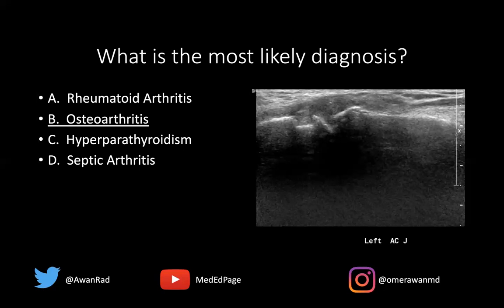In septic arthritis, there may be a joint effusion that could be complex. If we apply color Doppler, there may be some hyperemia around the effusion. You'd also see erosions along both sides of the joint, and maybe some soft tissue swelling and subcutaneous edema. Those would be findings we'd expect to see in septic arthritis.